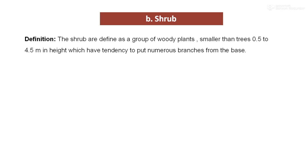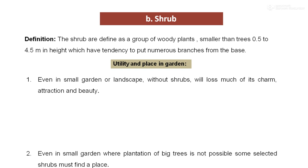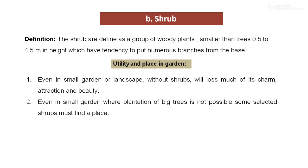The second category is shrub. Shrubs are defined as a group of woody plants, smaller than trees, having 0.5 to 1.5 meters in height, which have a tendency to put out numerous branches from their base. Regarding the utility or place of shrubs in a garden: even in a small garden or landscape, without shrubs, we lose much of its charm, attraction, and beauty. Even in a small garden where plantation of big trees is not possible, some selected shrubs must find a place, which replaces the role of trees.